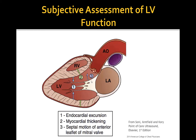Second, myocardial thickening, based on the fact that the LV wall with normal function will get thicker during systole. You can think about an empty urinary bladder, whose walls always appear thicker as compared with a distended bladder. The third component is the septal motion of the anterior leaflet of the mitral valve.